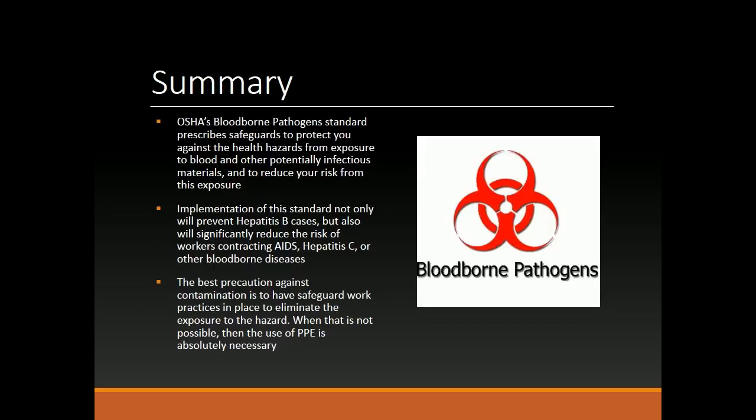Summary. OSHA's Bloodborne Pathogens standard prescribes safeguards to protect you against the health hazards from exposure to blood and other potentially infectious materials, and to reduce your risk from this exposure. Implementation of this standard not only will prevent Hepatitis B cases, but will also significantly reduce the risk of workers contracting AIDS, Hepatitis C, or other bloodborne diseases. The best precaution against contamination is to have safeguard work practices in place to eliminate exposure to the hazard. When that is not possible, the use of PPE is absolutely necessary.